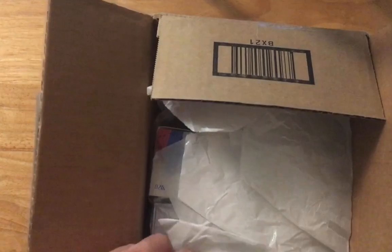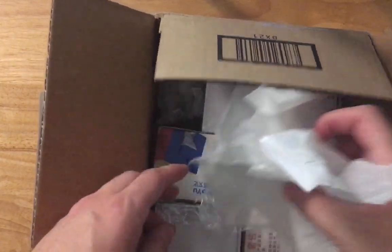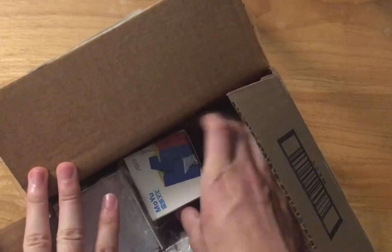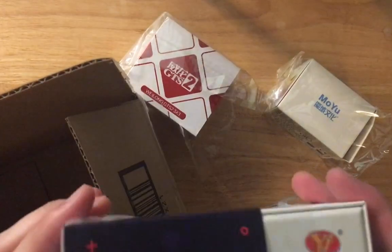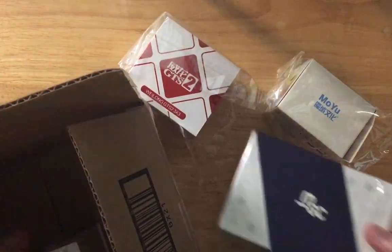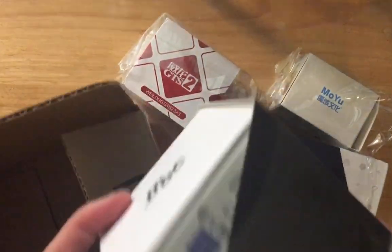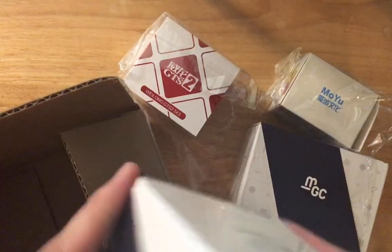So we've got some packaging, a seat, some cloths. This packaging looks already open. This is the RS3M GTS2 that was on sale. This is the MGC. One of these is the 6 and one of these is the 7. This is the 7 I presume?